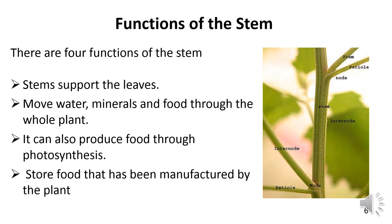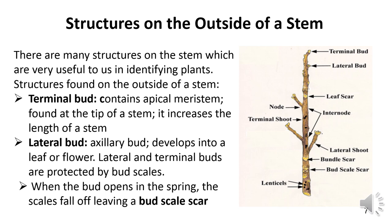There are many structures on the stem which are useful in identifying plants. Sometimes it is easier to identify a plant by its stem rather than a leaf. The first external structure is the terminal bud, also called the apical bud, which contains apical meristem found at the tip of the stem and increases the length of the stem. The lateral bud, also called the axillary bud, develops into a leaf or flower. Lateral and terminal buds are protected by bud scales, which help the bud survive under harsh environments. A bud scale scar is the mark left on the stem when the bud scales fall from the emerging bud.